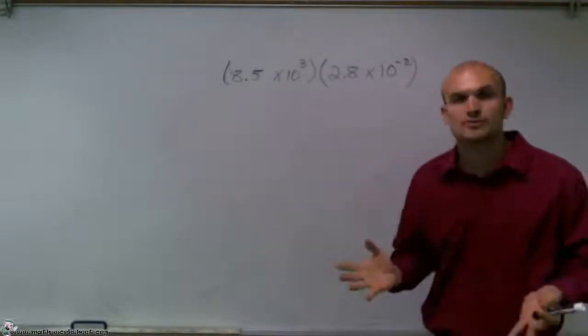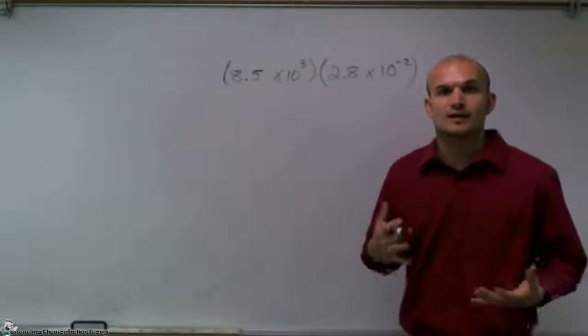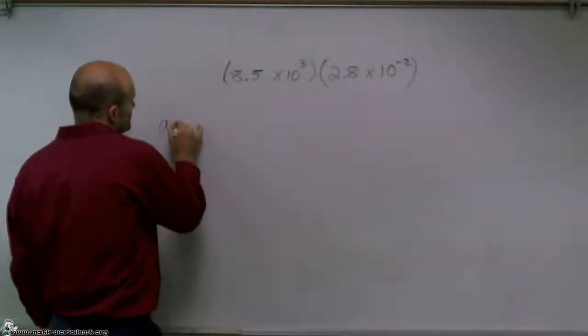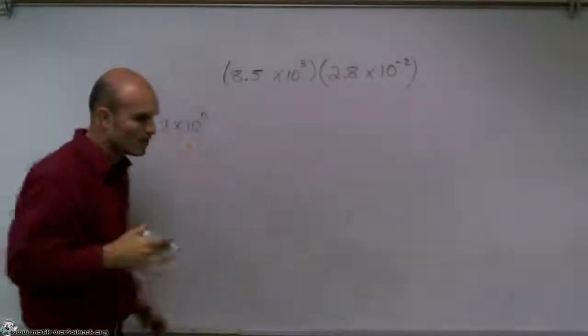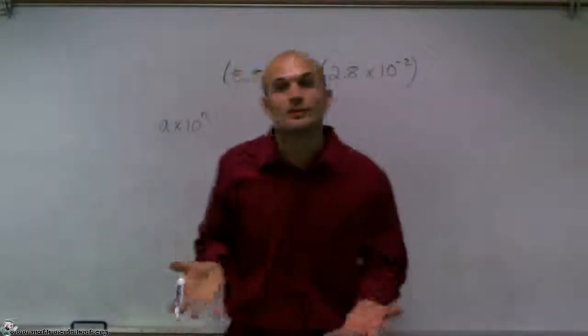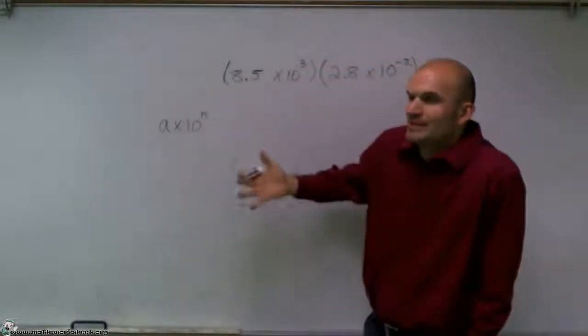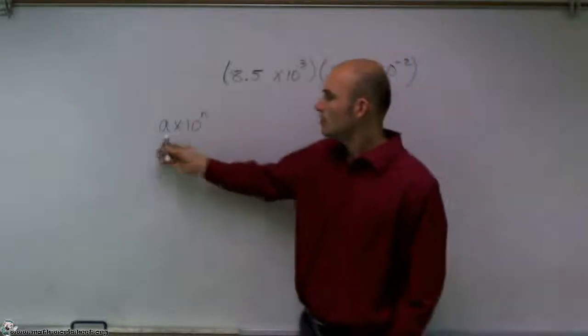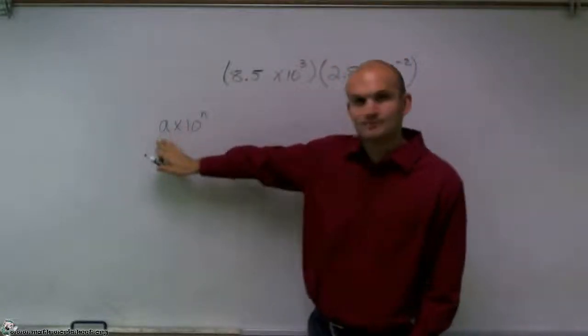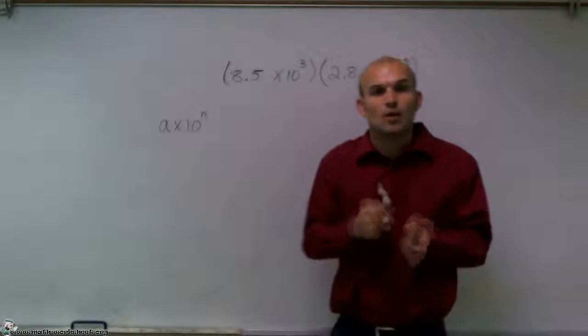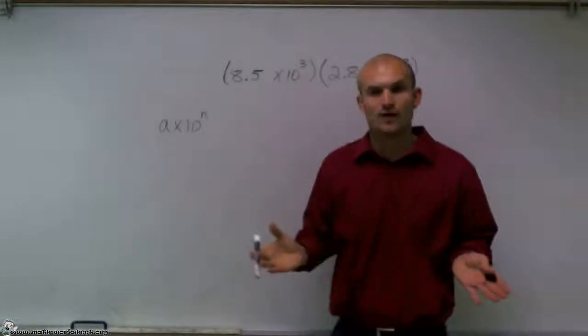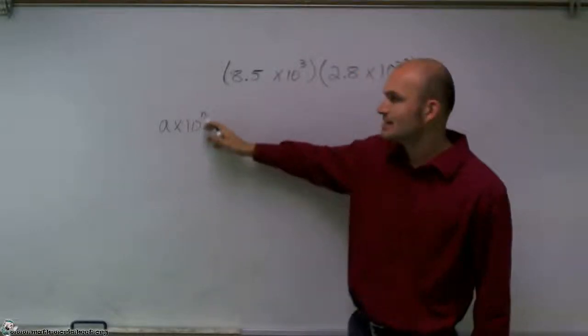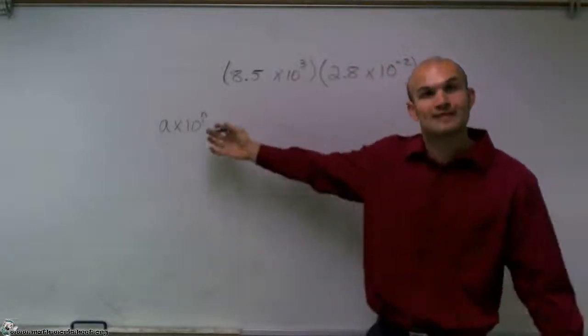Before we start, I want to make sure we have an understanding of what exactly is scientific notation. We use scientific notation when we want to write very large or very small numbers that are difficult to write in regular decimal notation. We write it as a times 10 raised to n, where a is a number between 1 and 10, and n is an integer.